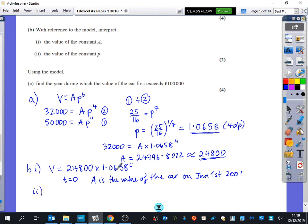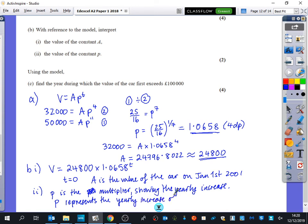And we're going to be asked about what P is. Well, look, each year we're going to be multiplying by 1.0658. So we're saying P is the multiplier showing the yearly increase. You could say P represents the yearly increase of 6.58%. Because every year it's being multiplied by 1.0658.